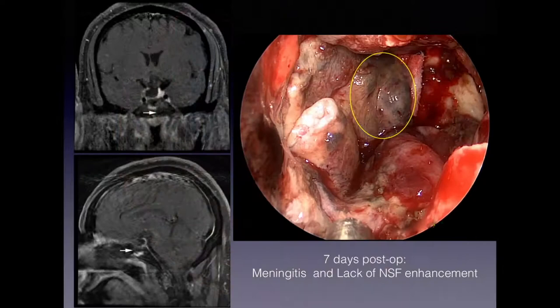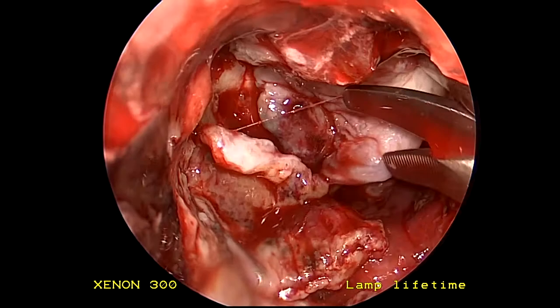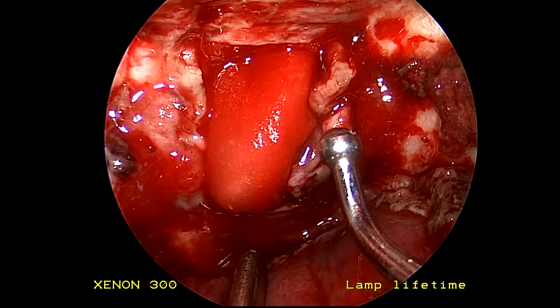Unfortunately, seven days post-op, the patient presented with meningitis and a lack of septal flap enhancement on MRI. This is typical of necrosis of the nasoseptal flap. We took the patient back to the operating room, transected the flap, confirmed it had no vascularization, and had to redo the reconstruction.